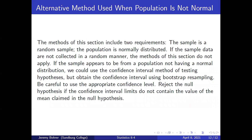The methods of this section include two requirements: the sample is a random sample, and the population is normally distributed. If the sample data are not collected in a random manner, the methods of this section do not apply. If the sample appears to come from a population not having a normal distribution, we could use the confidence interval method of testing hypotheses but obtain the confidence interval using bootstrap resampling. Be careful to use the appropriate confidence level. Reject the null hypothesis if the confidence interval limits do not contain the value of the mean claimed in the null hypothesis.